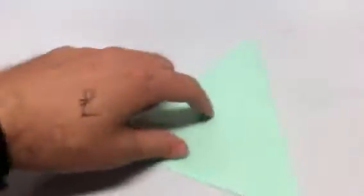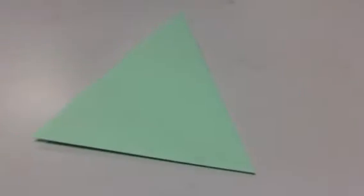And then fold the bottom left corner up along that edge. And there we go, isosceles triangle. Two sides equal and bottom corners equal. Fantastic, that's the isosceles triangle.